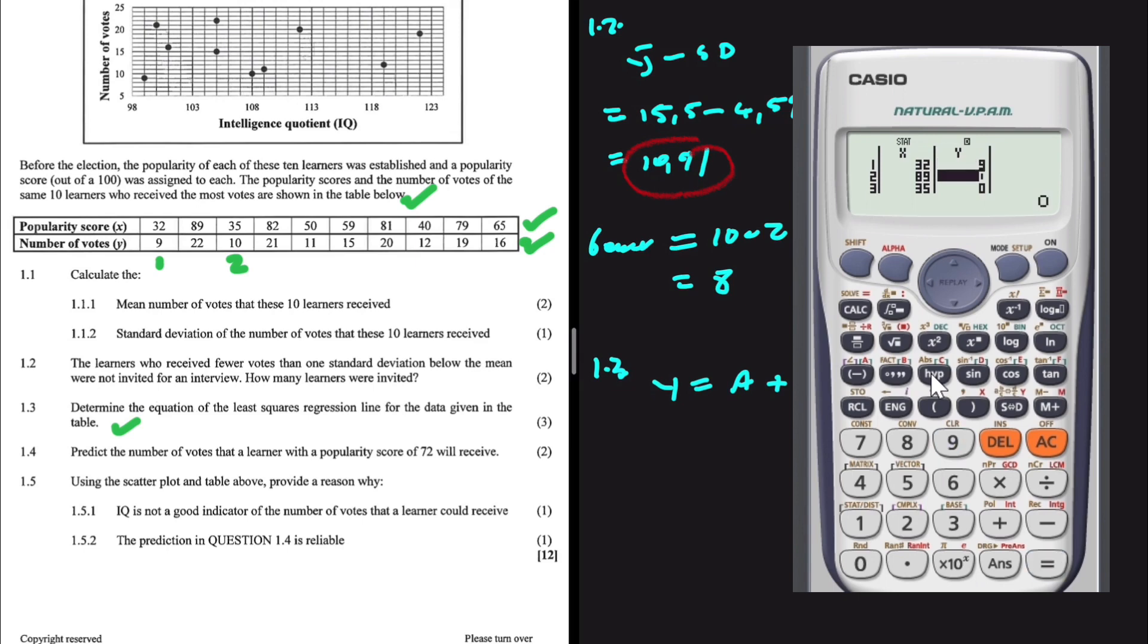So 32 is going with 9, 89 is going with 22, 35 with 10, 21, 11, 15, 20, 12, 19, and 16. There we go. I have my data. 16, not 17. The y value is 65, and the x value is 16. There we go. Now I can press AC, shift 1.